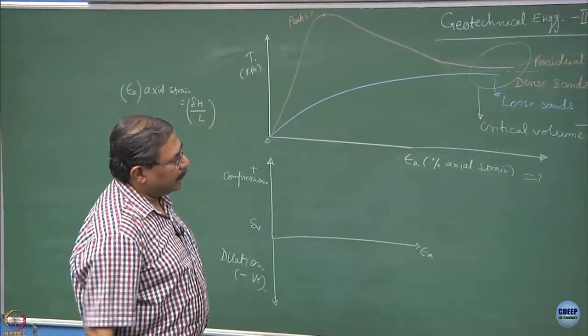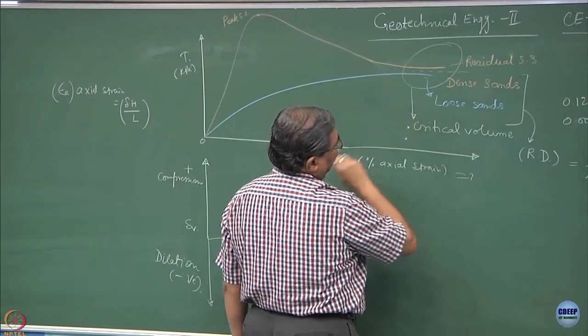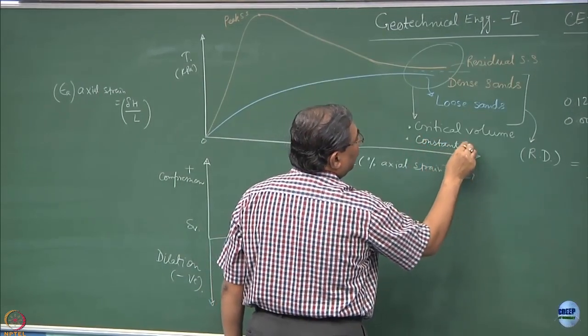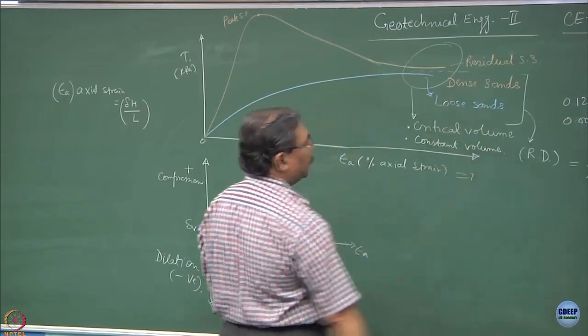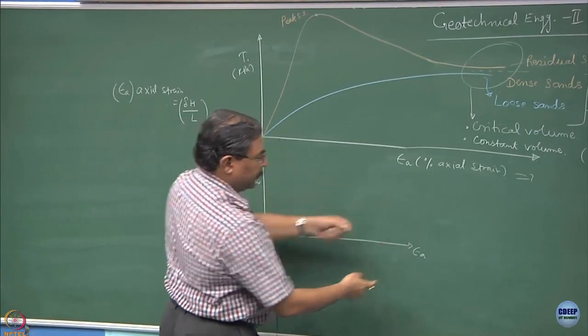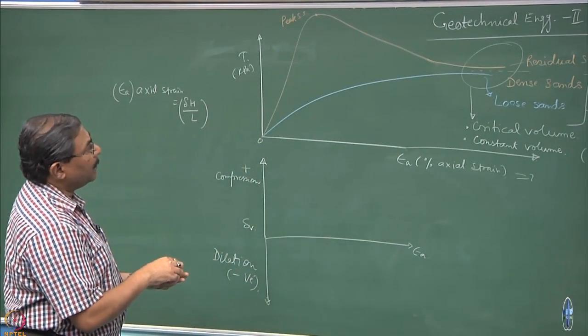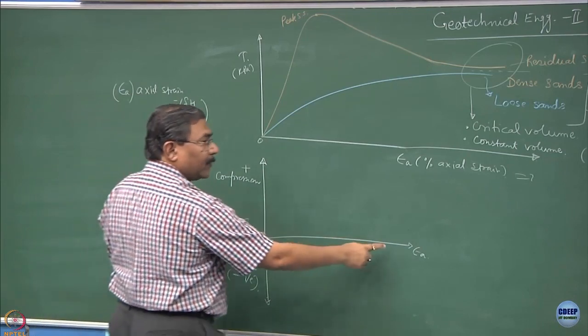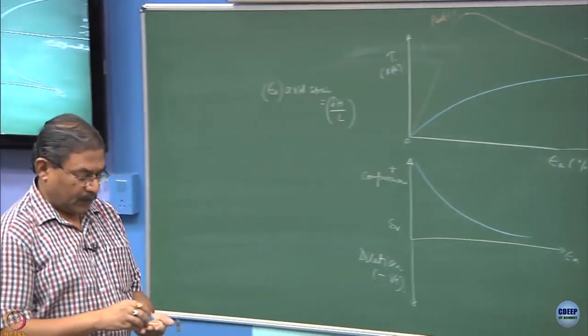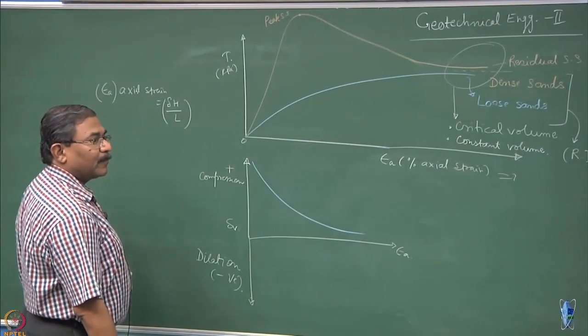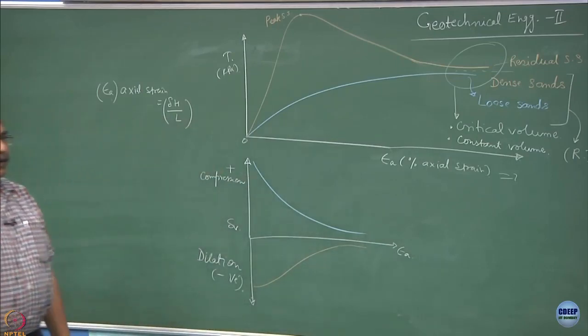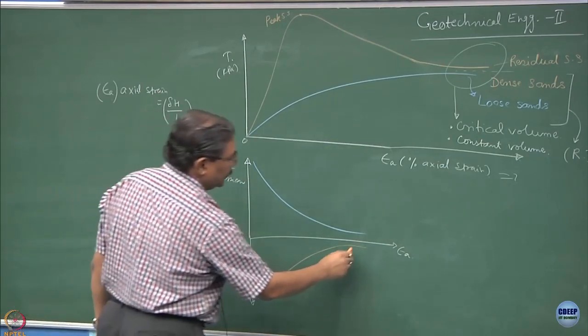If you plot the deformation versus strain relationships, what you will observe is the loose sands when you shear them are going to get compressed. However, what is going to happen to the dense sands? Dense sands will dilate and they would show like this the response. So this is for the dense sands, this is for the loose sands. Hope you can understand.